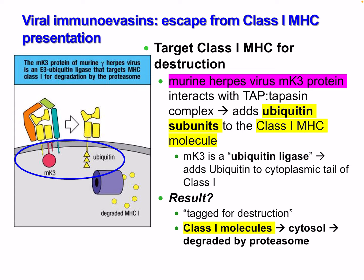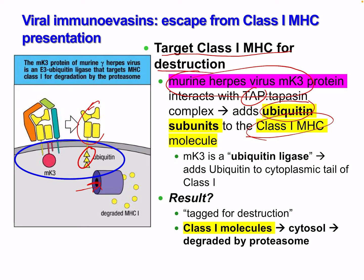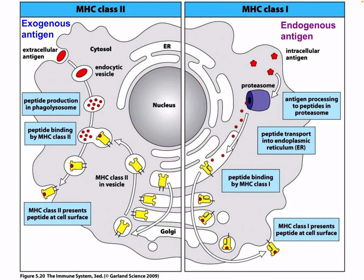Another evasion strategy: targeting class 1 MHC for destruction. Murine herpesvirus MK3 protein interacts with the TAP and tapasin complex and adds a ubiquitin subunit to the class 1 MHC molecule. Since ubiquitin tags proteins for the proteasome, the MHC is then degraded. MK3 is a ubiquitin ligase that adds ubiquitin to the cytoplasmic tail of class 1 MHC; the result is that class 1 MHC goes to the cytosol and is degraded by the proteasome.